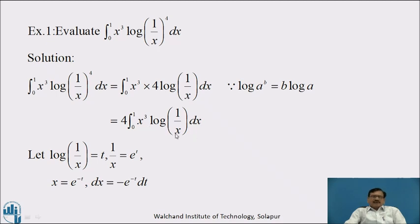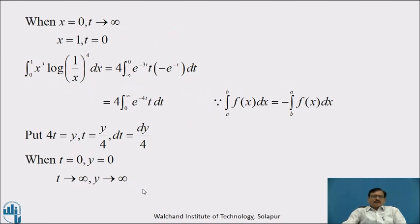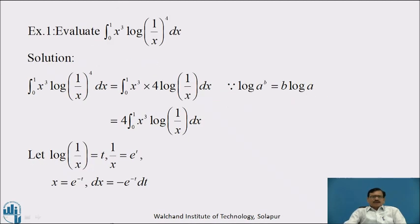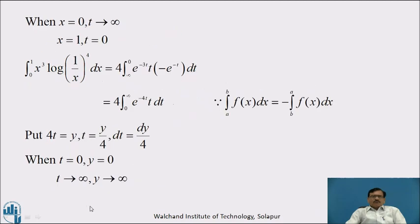We have to express this integral in terms of e raised to minus t. The suitable substitution is: let log of 1 by x equal to t. That is, 1 by x equal to e raised to t. Therefore, x equal to e raised to minus t, and dx equal to minus e raised to minus t dt. Accordingly we change the limits: when x equal to 0, t tends to infinity, and when x equal to 1, log of 1 is 0, therefore t equal to 0.